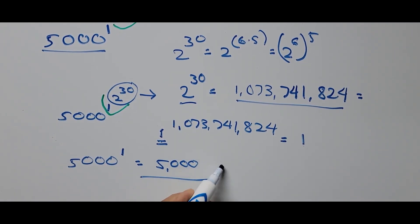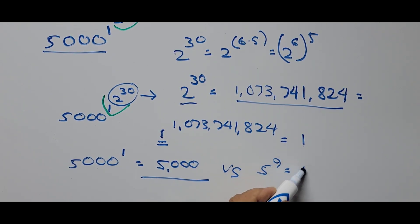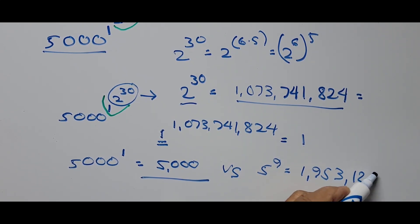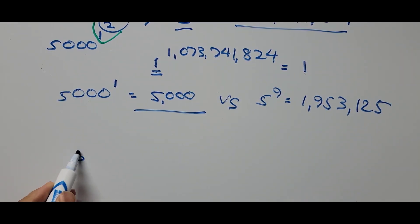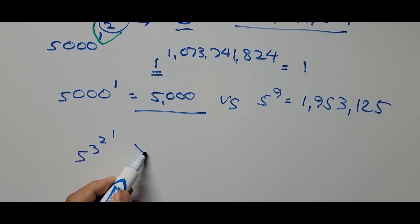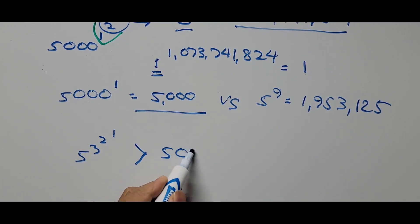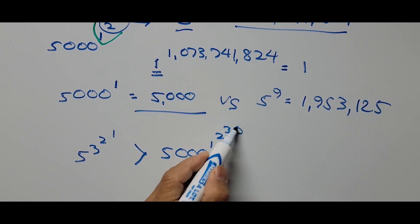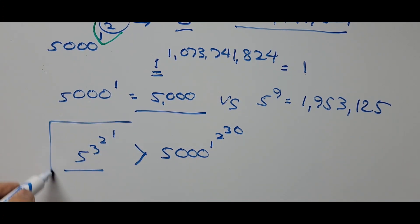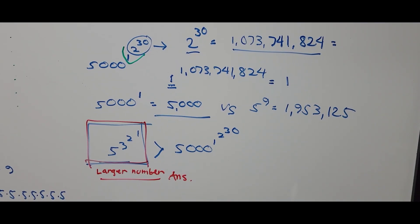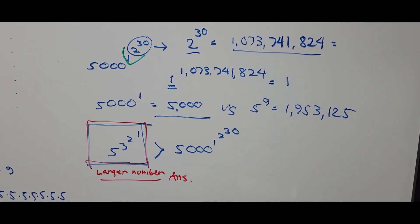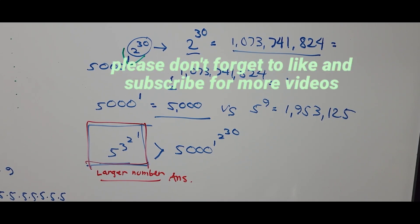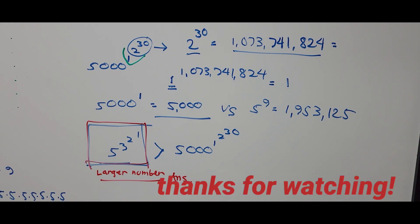Comparing the two: 5 raised to the 9th power is 1,953,125, while 5,000 raised to the first power is just 5,000. Therefore, 5 to the 3rd to the 2nd to the 1st power is greater than 5,000 raised to the 1st to the 2nd to the 30th power. The left side is the larger number — that is our answer. That's all for now. Please don't forget to like and subscribe for more videos. Thank you very much and see you in the next video!